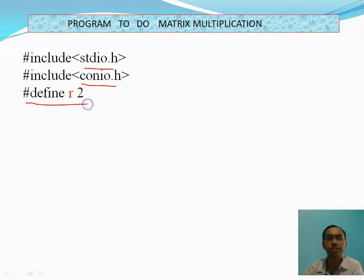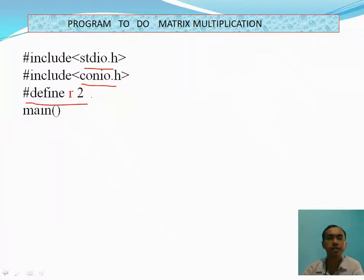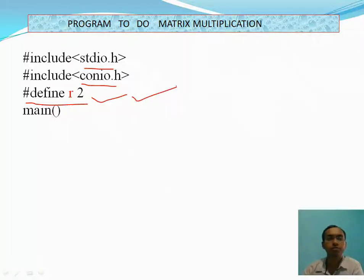This is called a macro definition — hash define r, where r will be replaced by 2. So why are we using hash define macro, hash define r 2? Because wherever we need to write the matrix order as 2 cross 2, then we can change the program and that change will be reflected in all the code. So it will be easy to manage the code — that is why we are writing hash define r 2.